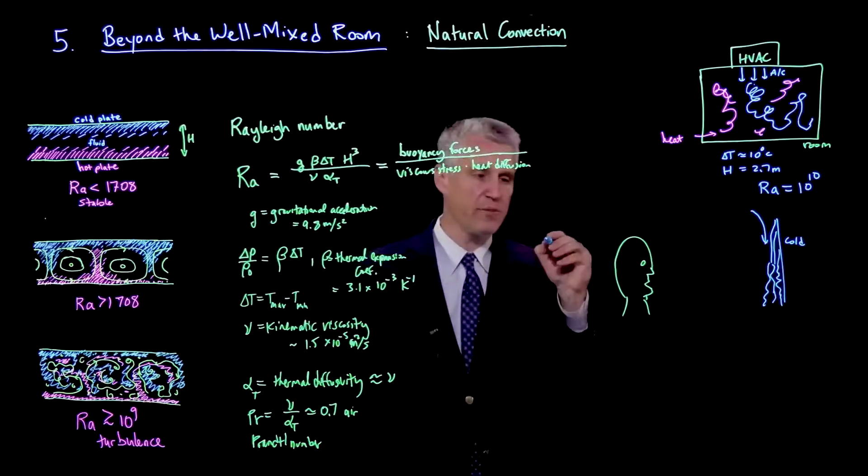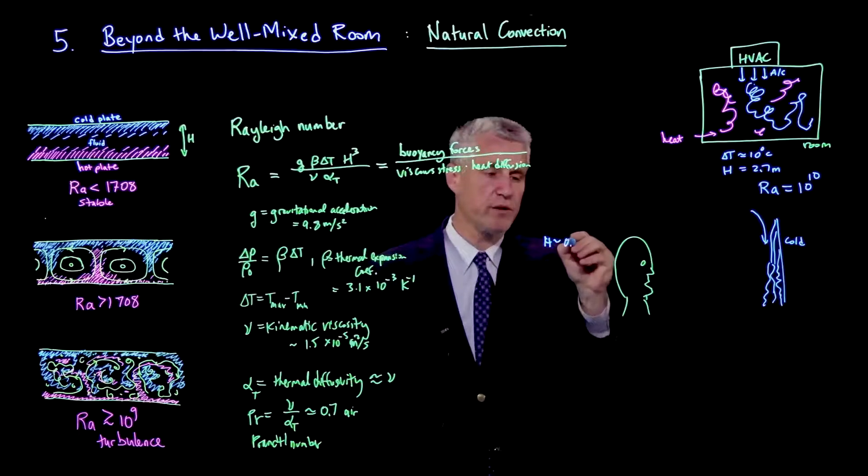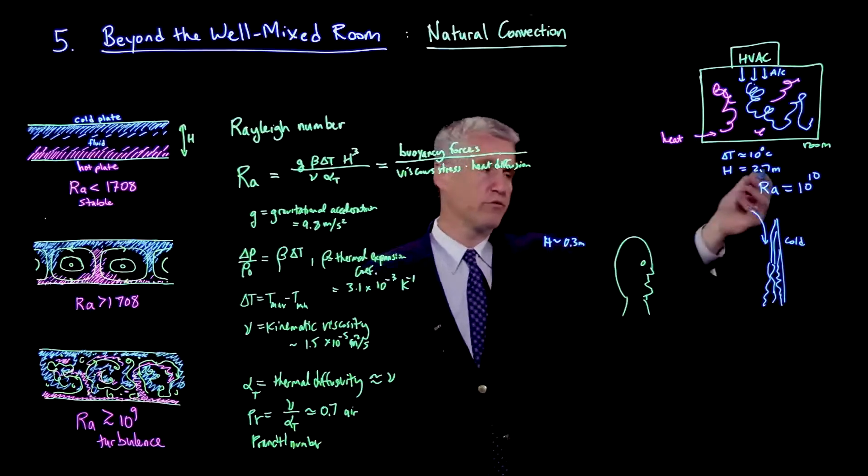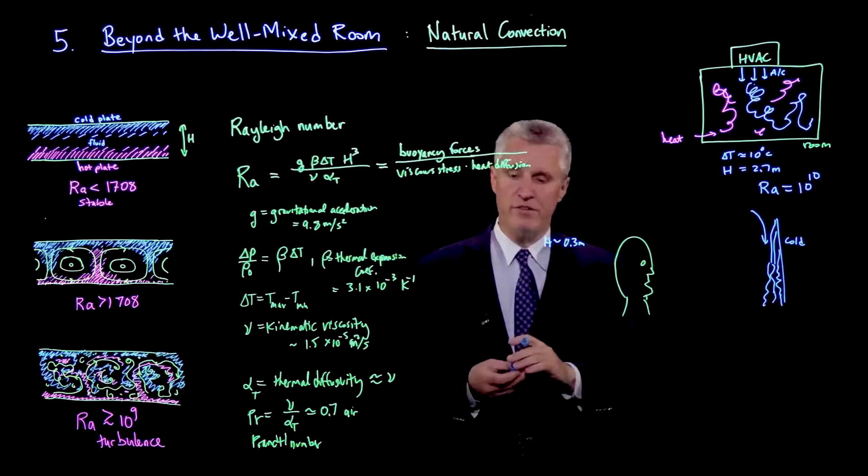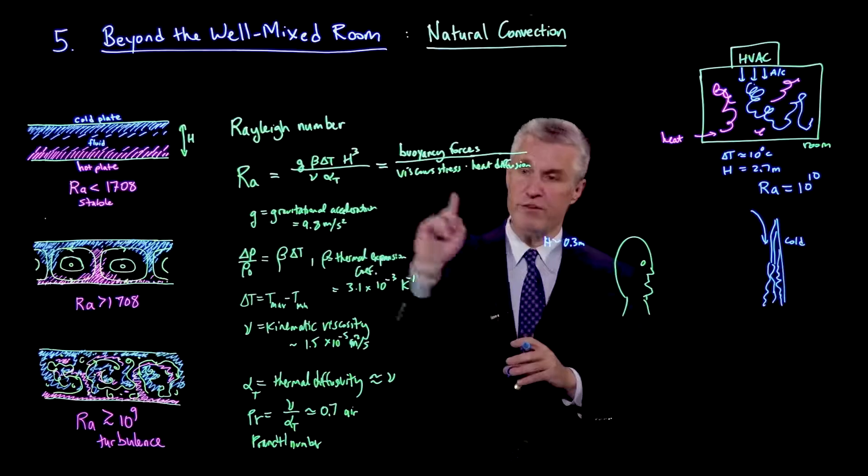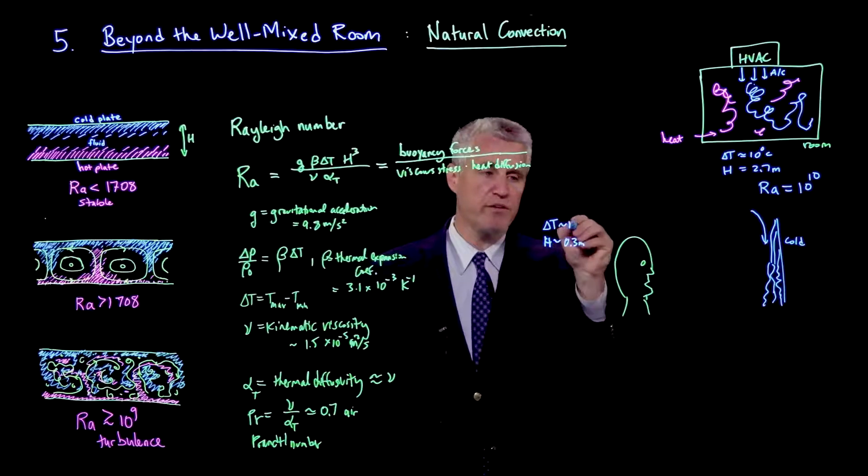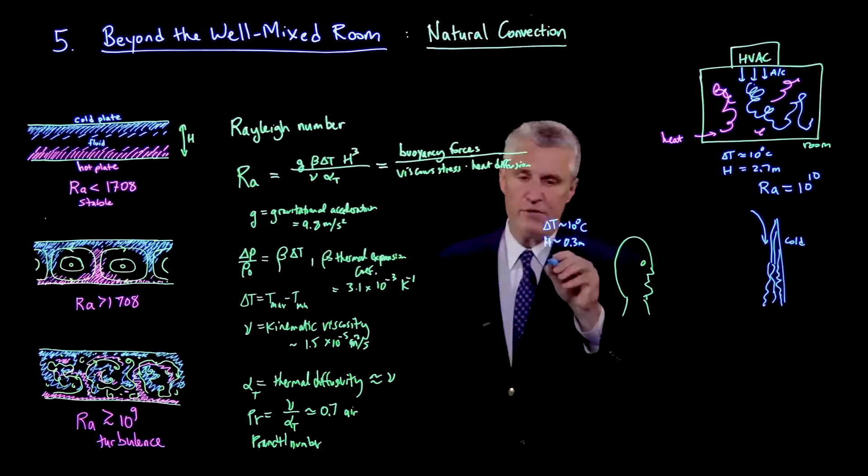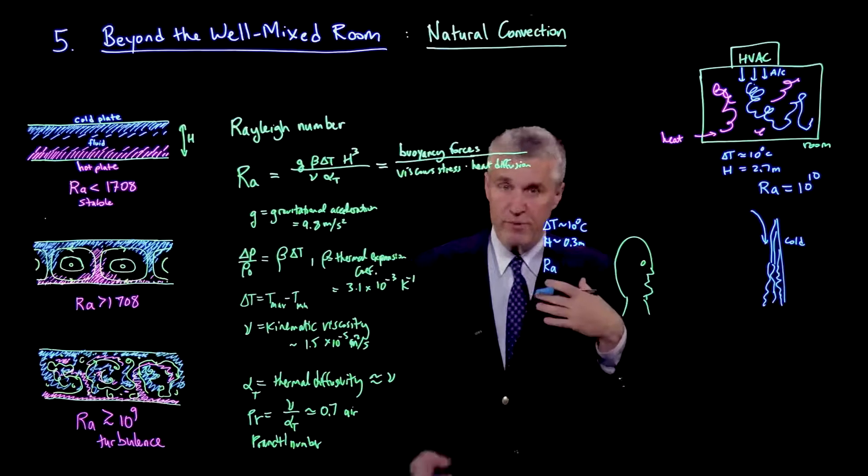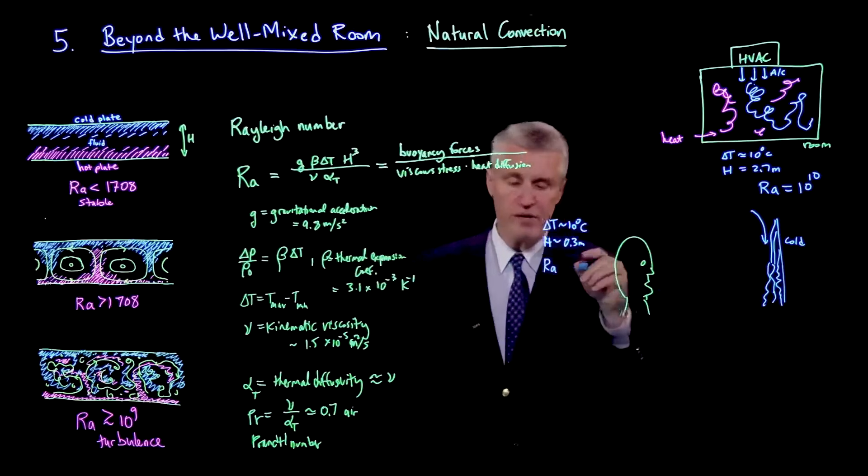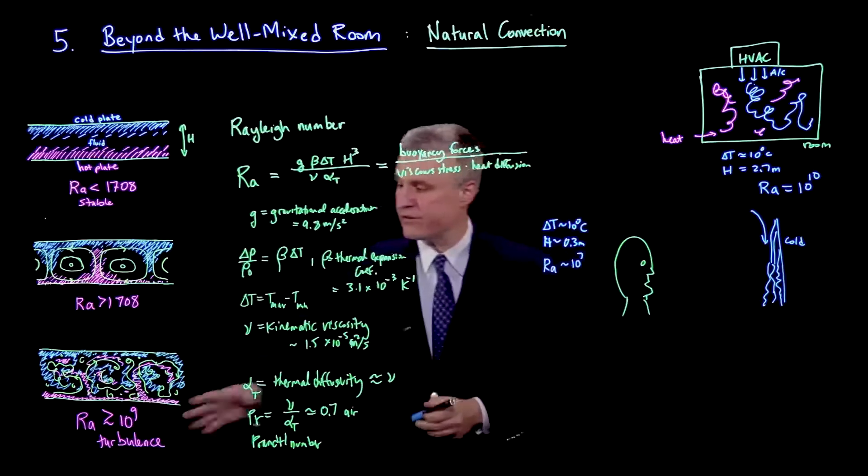If you now plug in a little bit smaller size, let's say 30 or 40 centimeters - let's say here maybe h would be 0.3 meters. We'll drop the size roughly by a factor of 10, but it comes in cubed, so that drops the Rayleigh number by a factor of 1,000. If we still keep our delta T at 10 degrees, and it might actually be much more than that, the Rayleigh number around this person's head, just by virtue of the heat generated by the body, can be of order 10 to the seventh.